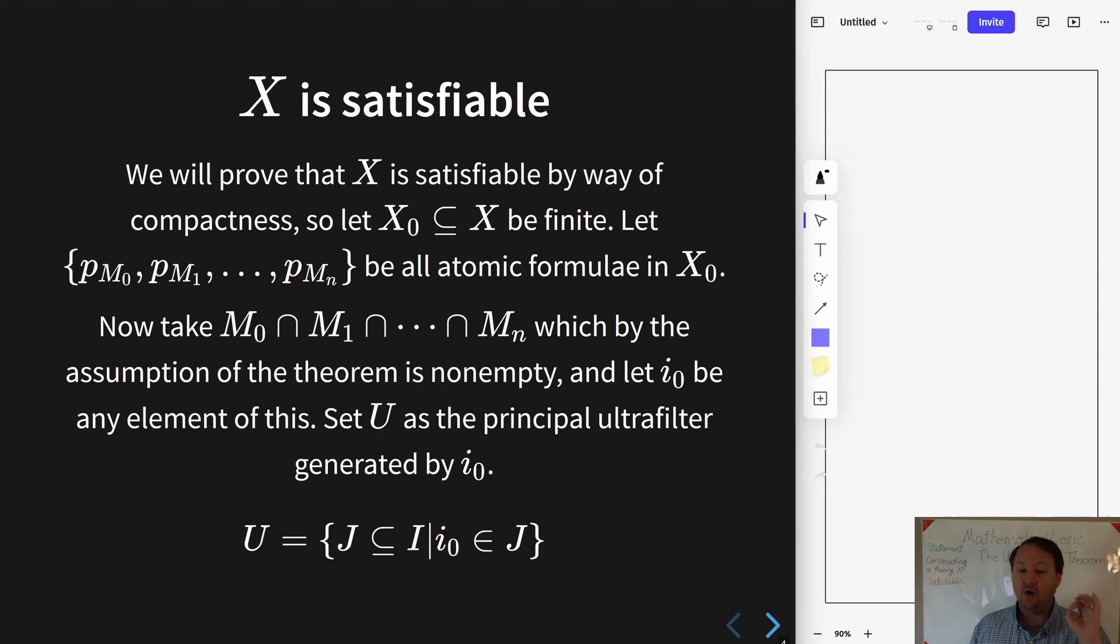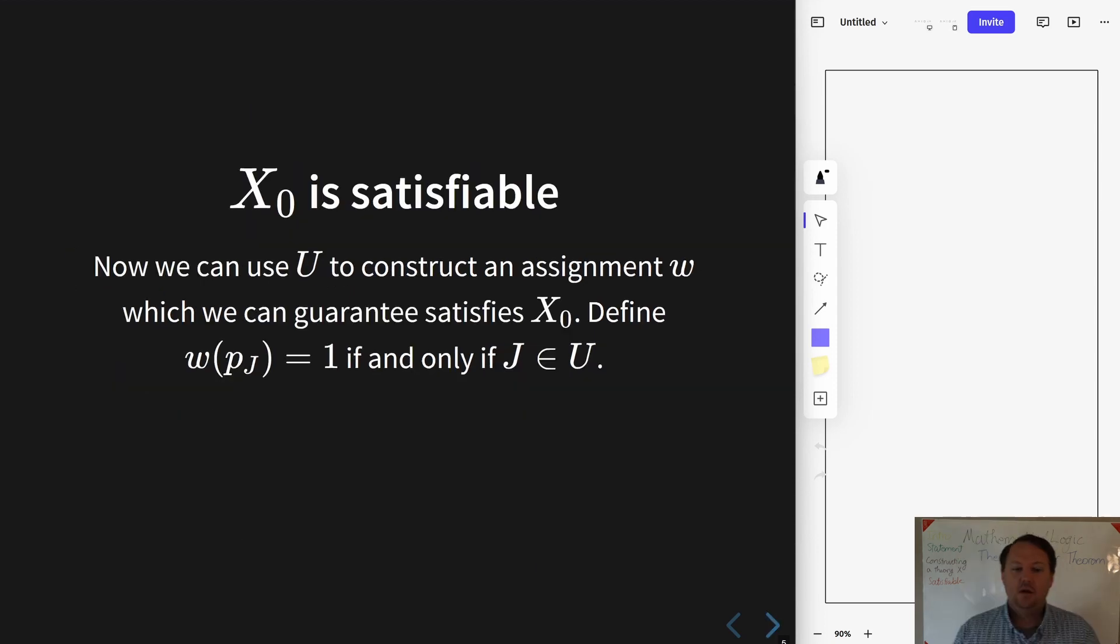We go ahead and choose an arbitrary element, call it i₀. We then use i₀ to generate an ultrafilter, and we are going to then use that ultrafilter to try to get a model which satisfies X₀. So keep in mind, we are still in the business of trying to prove that X₀ is satisfiable.